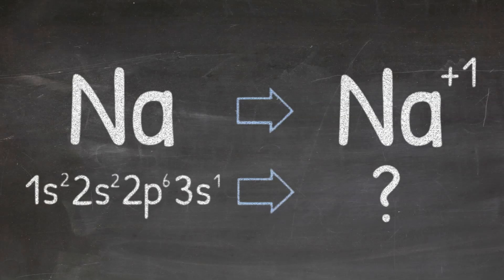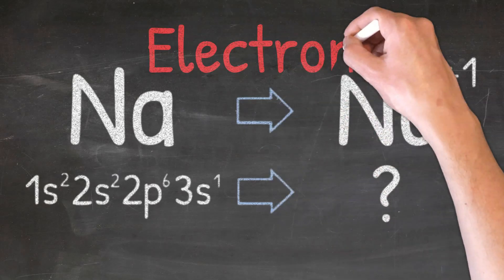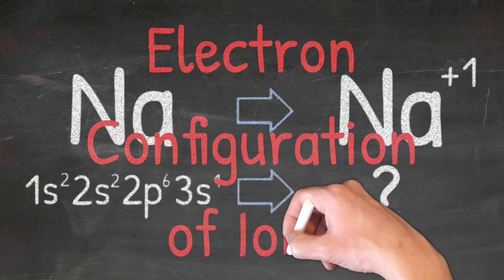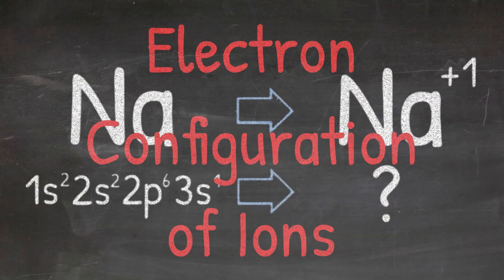Writing electron configurations for ions is very similar to writing them for atoms with only one small difference. In this video we are going to cover that difference and show you how to write the electron configuration for ions.